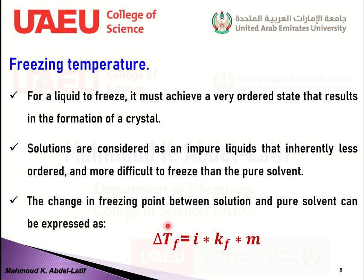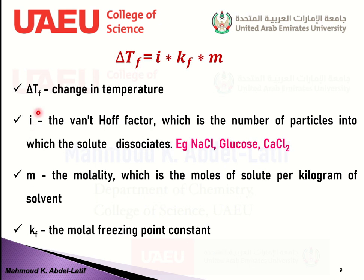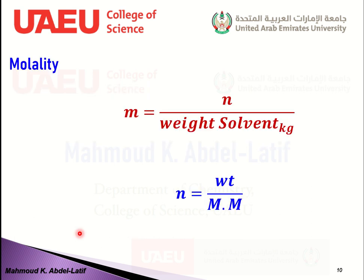In the freezing point depression equation: delta Tf is the change in freezing temperature, i is the Van't Hoff factor (number of particles into which the solute dissociates), m is the molality (moles per kilogram of solvent), and Kf is the molal freezing point depression constant. The number of moles N equals the weight of the solute divided by its molar mass.